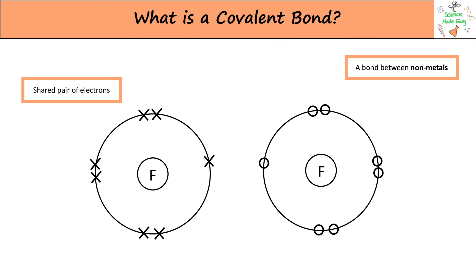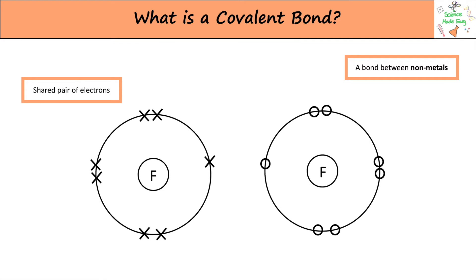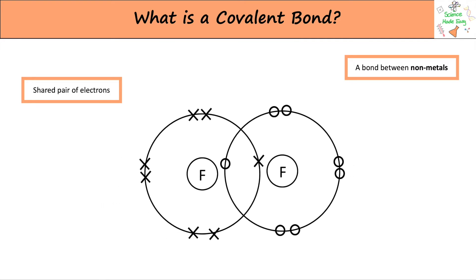Look at this diagram of two fluorine atoms. This is only showing their outer shells. Both atoms give one electron to be shared. This means that if you now count the total number of electrons in the outer shells, including the ones shared in the middle, you get eight. This means both fluorine atoms are now stable and have full outer shells.